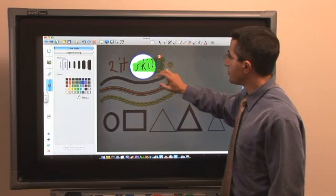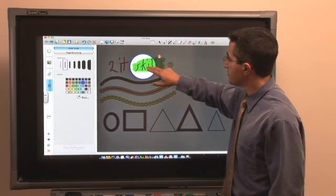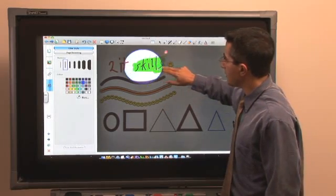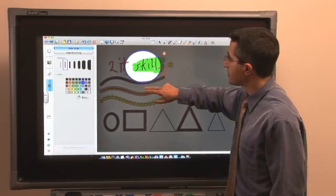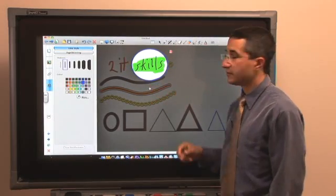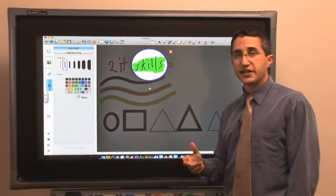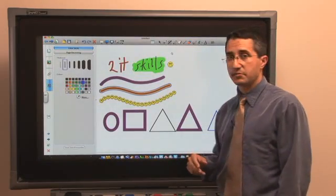If I want to make this larger, because I want the whole word skills to be in there, I can either move up and down or left and right and it will increase the size of the spotlight. To get rid of the spotlight, I just click on the red dot and it disappears.